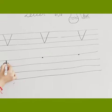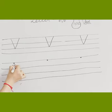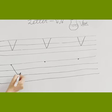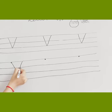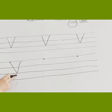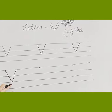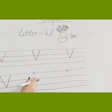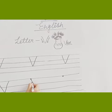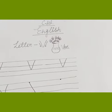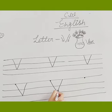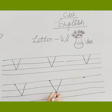Let's write the letter V with a dot. So let's start with V. Start from the dot and draw a slanting line to the bottom line. Then we will draw another slanting line in the same way. Now we have done letter V. Let's do it again. Start from the dot and draw a slanting line to the bottom line, then we will draw another slanting line in the same way.